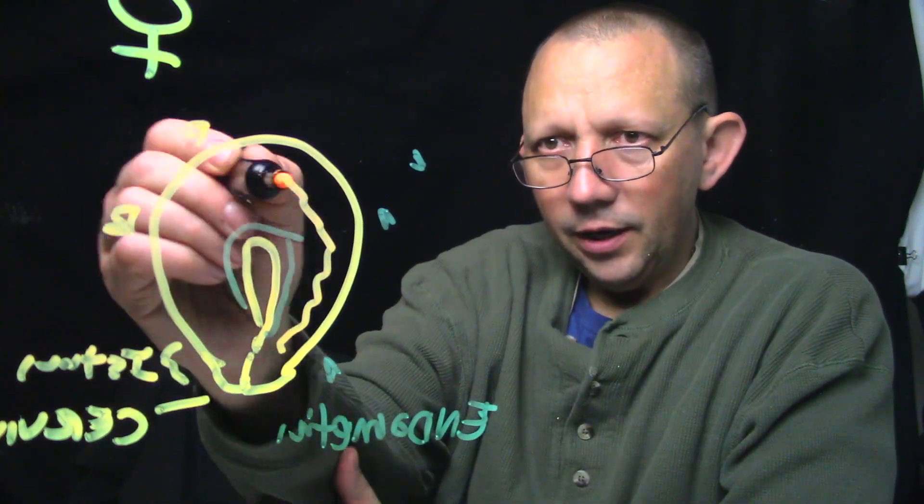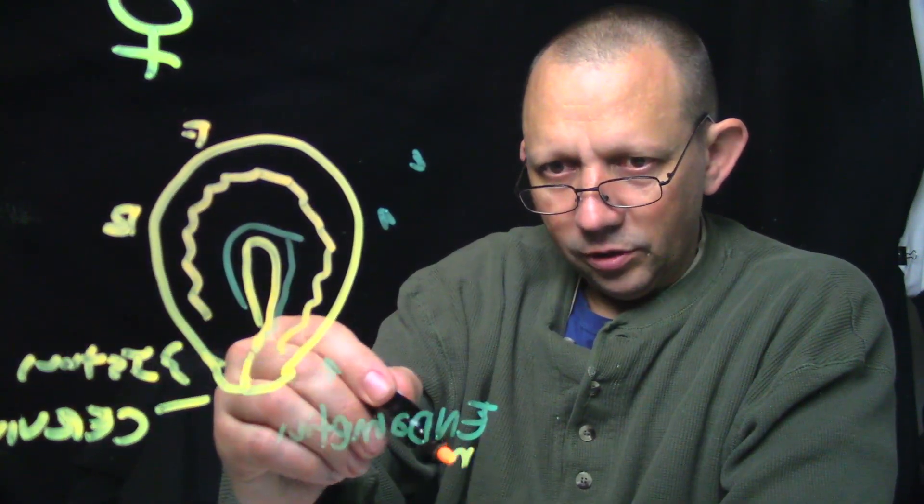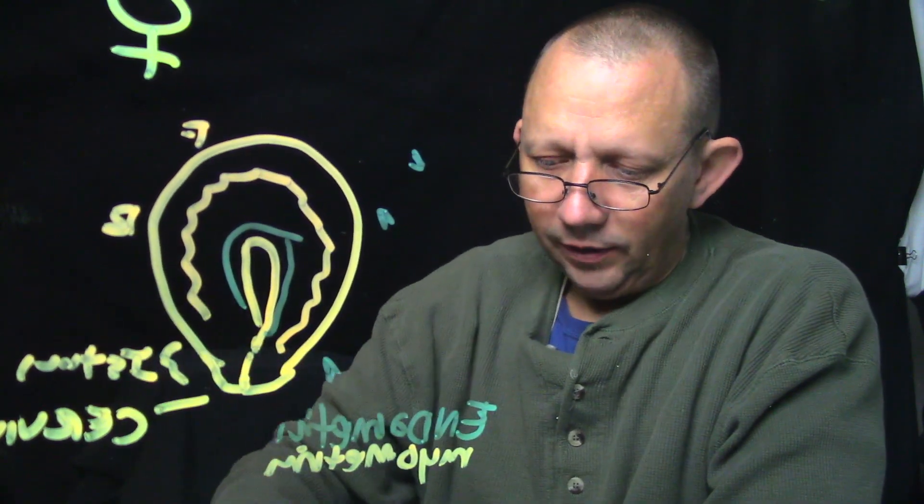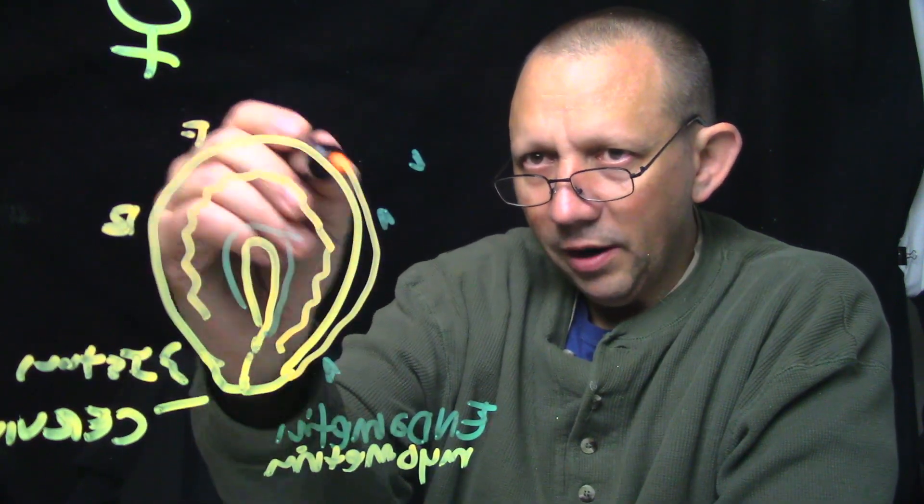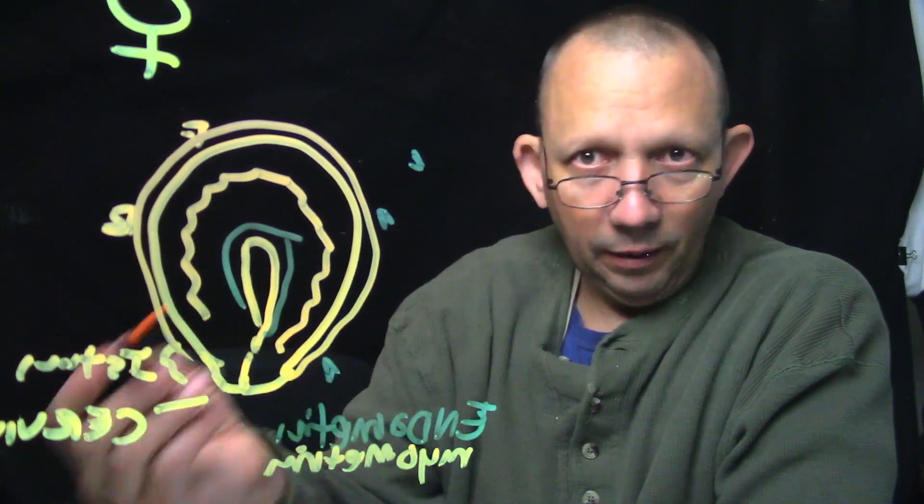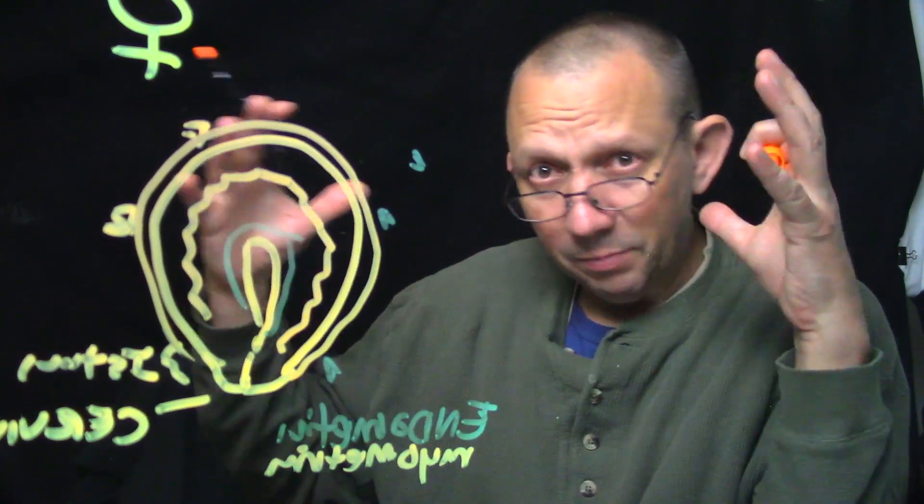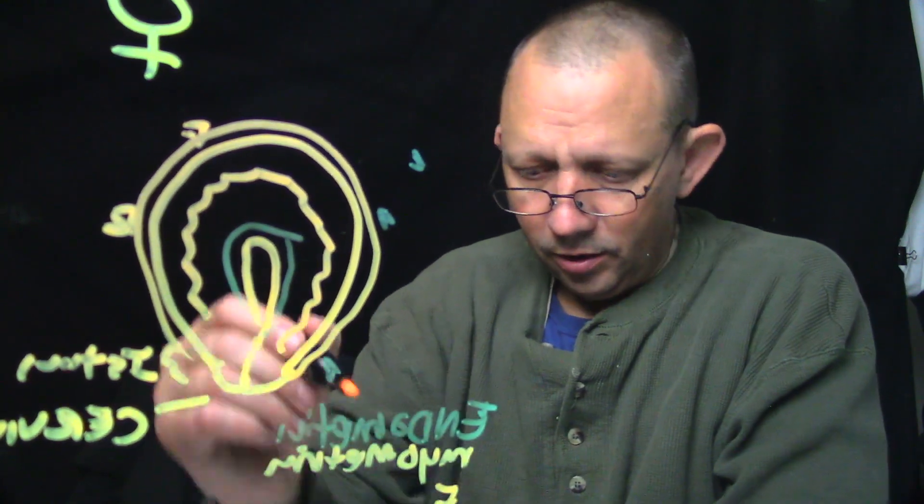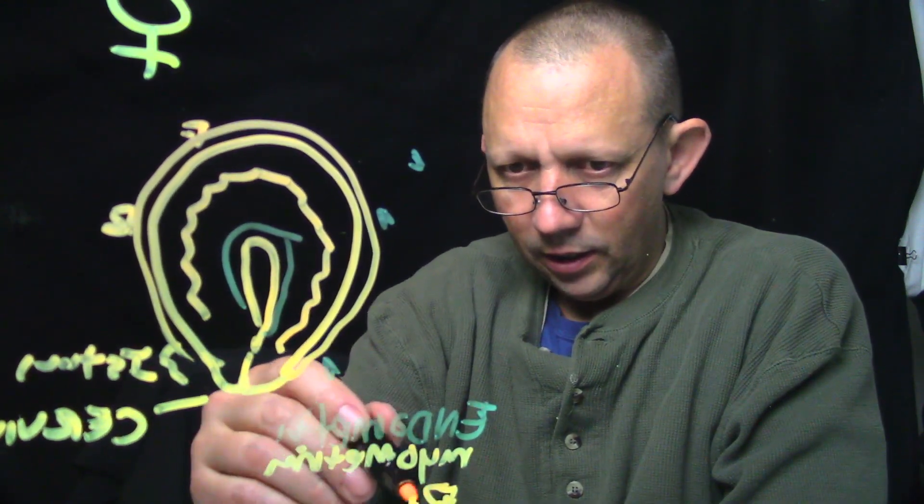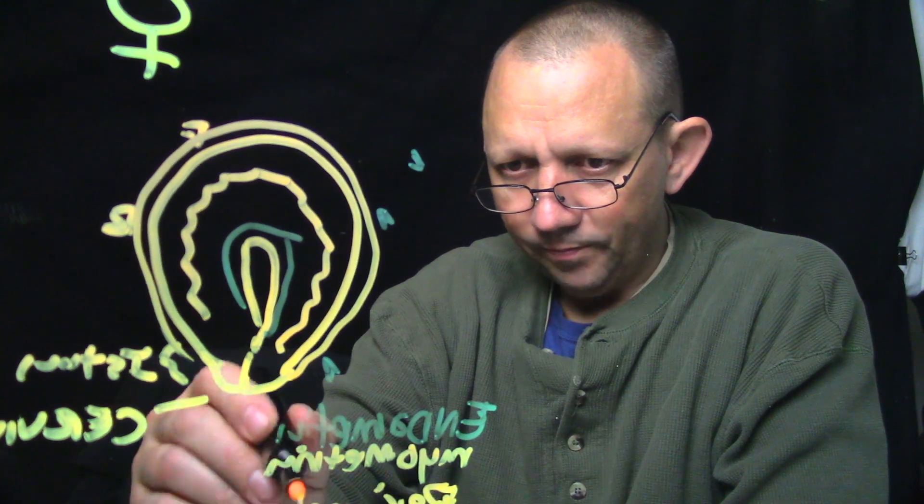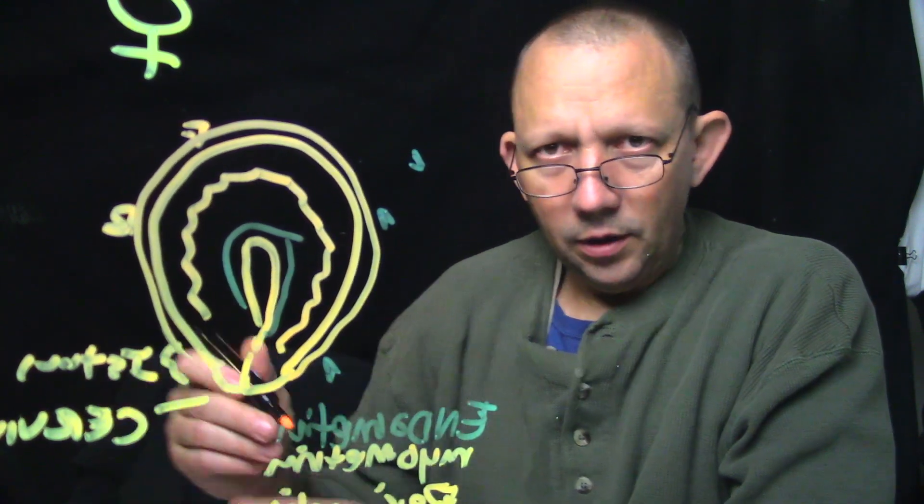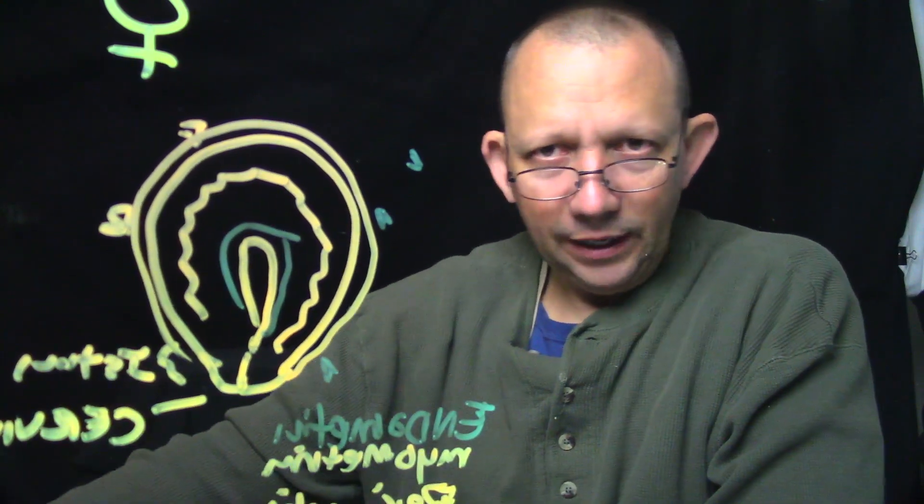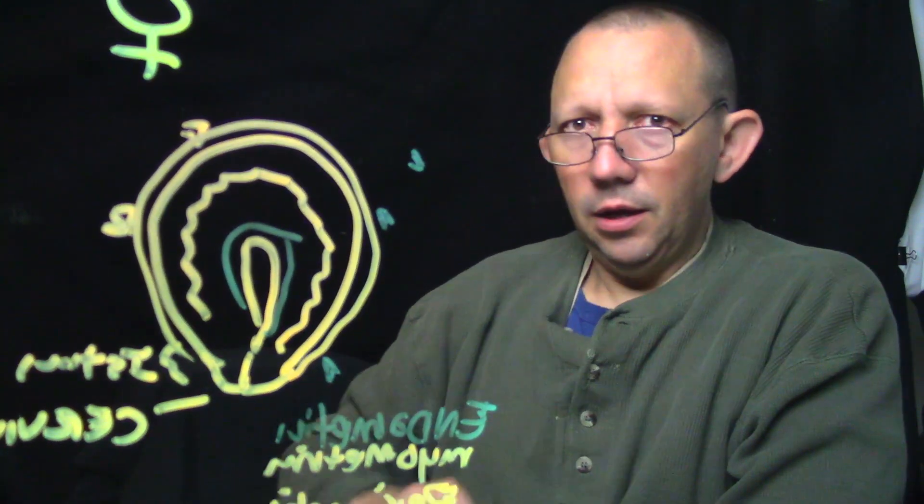The middle area is called the myometrium, and that's the muscle section—M-Y-O metrium. And then the outer side here is called the perimetrium, and that's just the outside fibers coverage. That can also expand and get many, many times bigger. P-E-R-I metrium. That's the perimetrium.